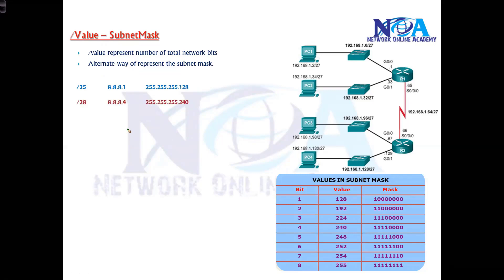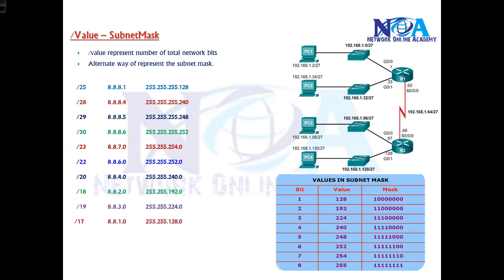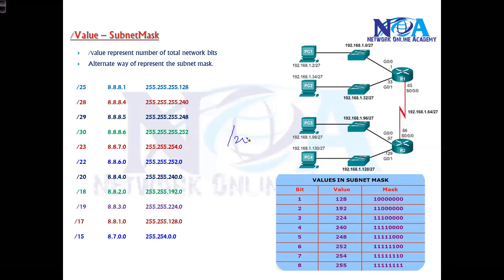Similarly, /28 means 8+8+8+4 = 28, so the subnet mask is 255.255.255.240 — because 4 bits means 240. For /19: 8+8+3 = 19, so the subnet mask is 255.255.224.0. For /20: 8+8+4 = 20, so the subnet mask is 255.255.240.0 — wait, with 4 bits that gives 240, so the subnet mask is 255.255.240.0.